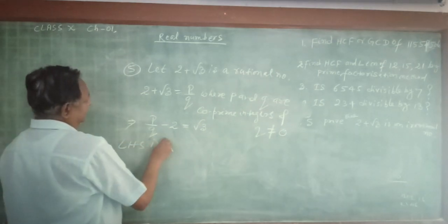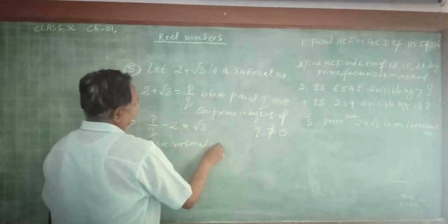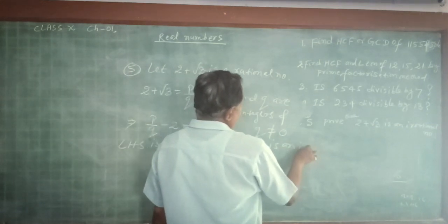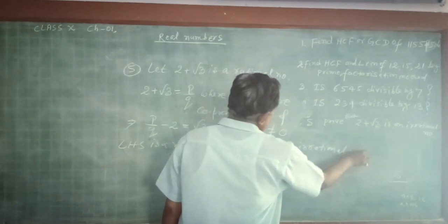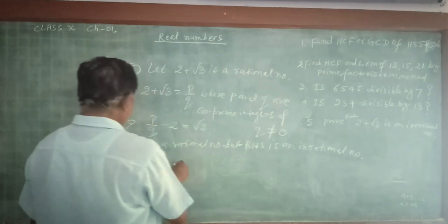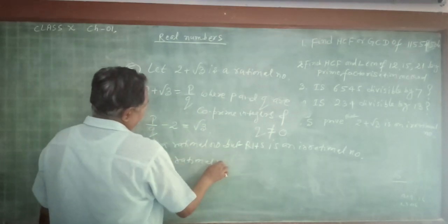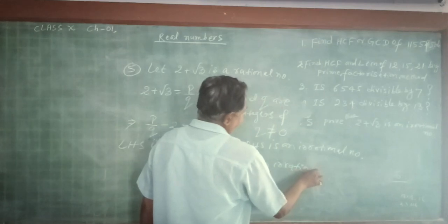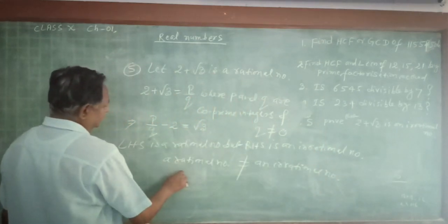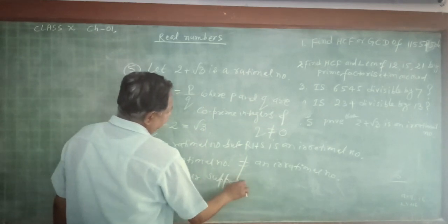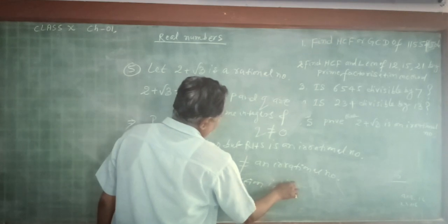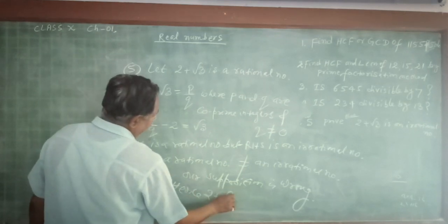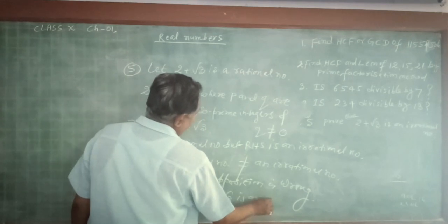So LHS is a rational number, but RHS is an irrational number. A rational number cannot be equal to an irrational number. Therefore our supposition is wrong. Hence 2 plus root 3 is an irrational number.